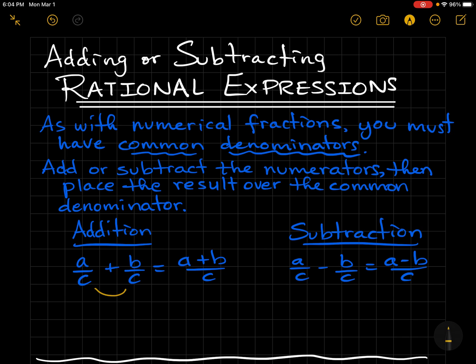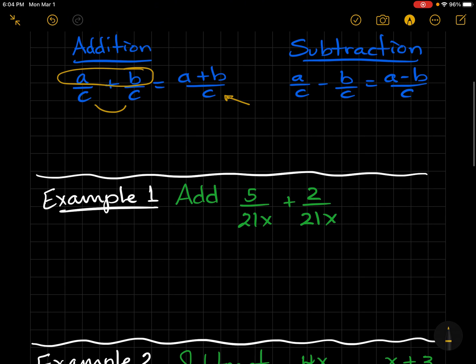So as you can see, these two fractions have a common denominator. We just add the numerators and use that common denominator. Don't try to do C plus C is 2C or anything like that. Just use the C. And the same with subtraction.